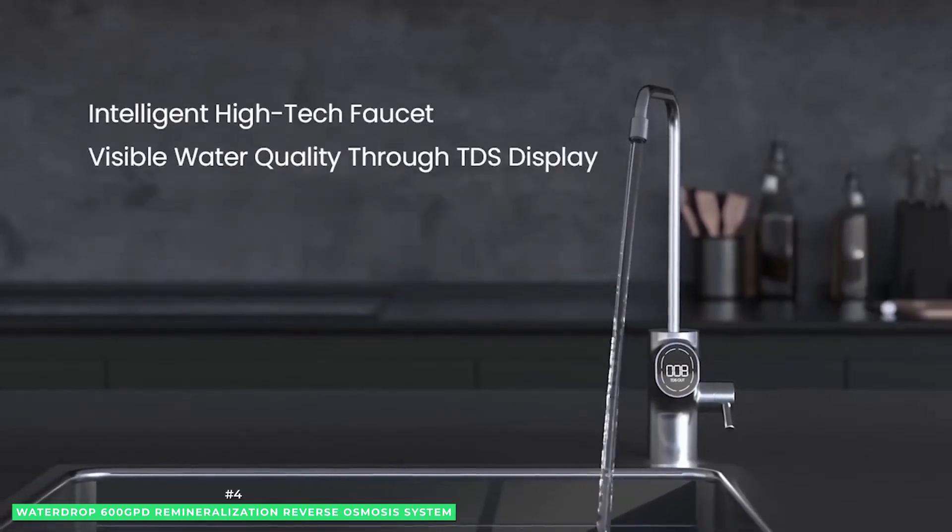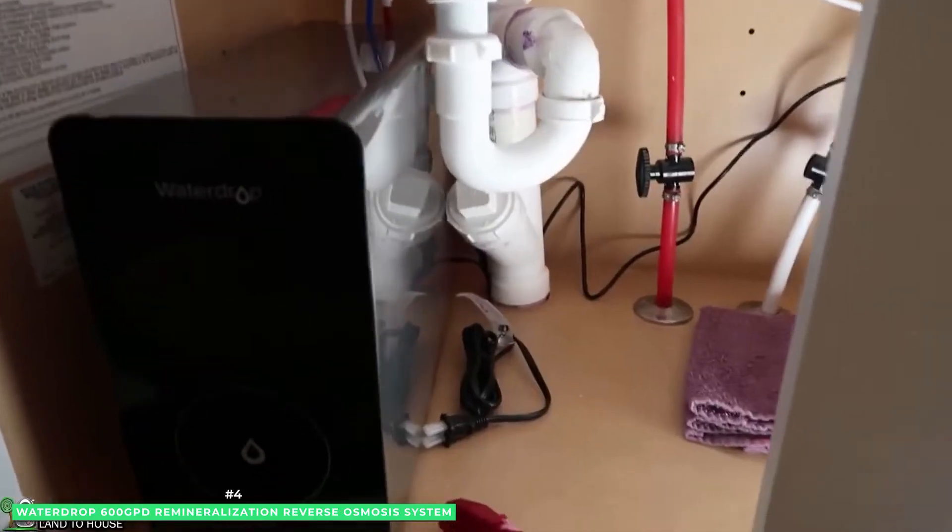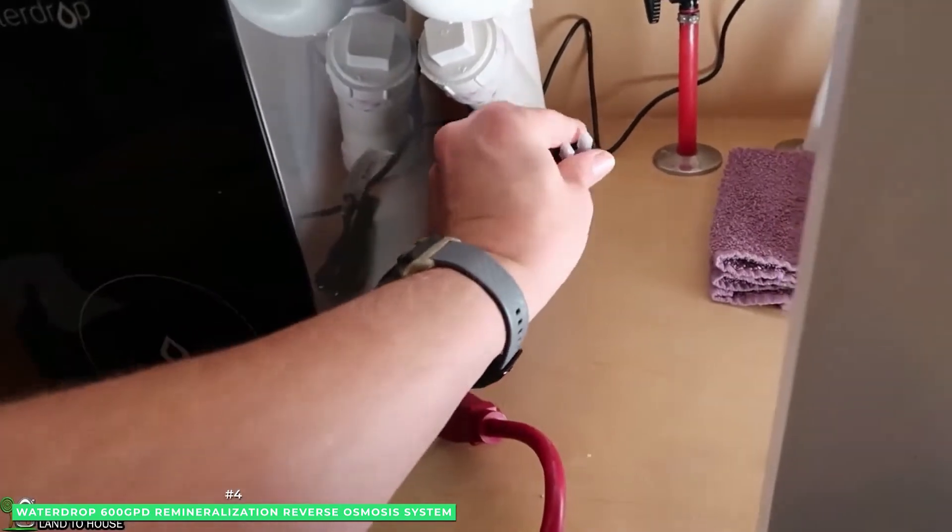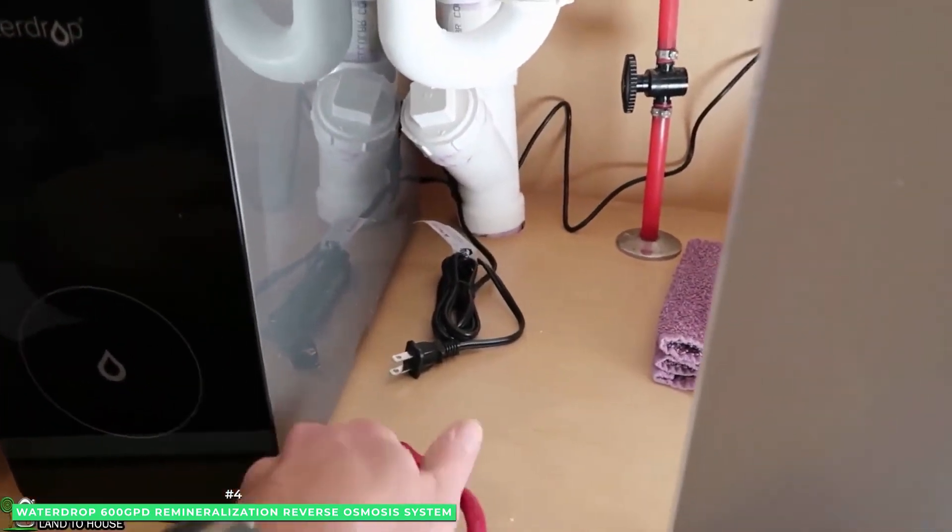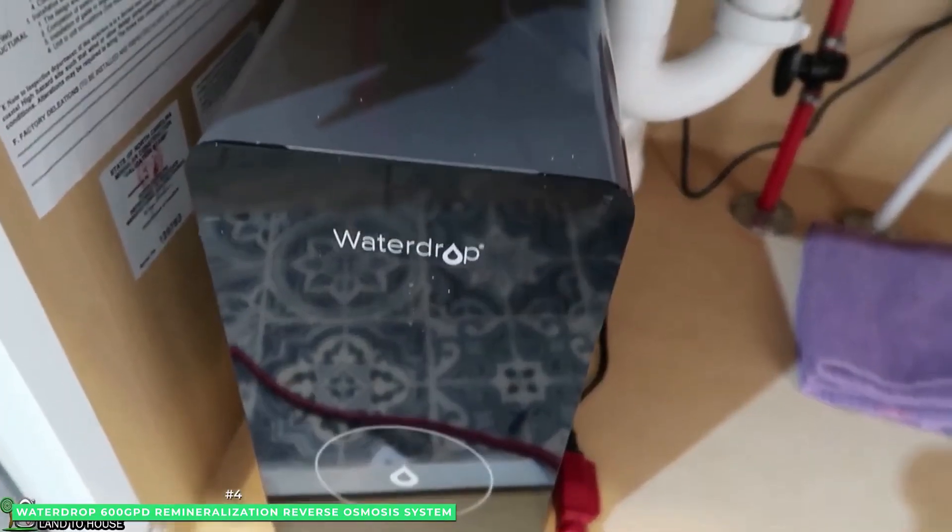Smartly designed to reduce wastewater, the Waterdrop tankless RO system boasts a 2-to-1 water-to-drain ratio. The Waterdrop D6 RO water filter system includes a lead-free, brushed nickel smart faucet.